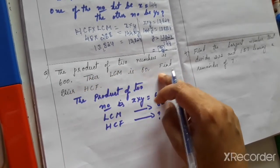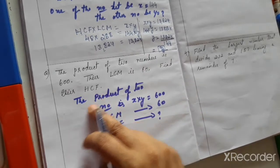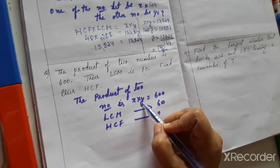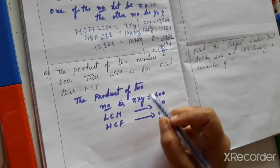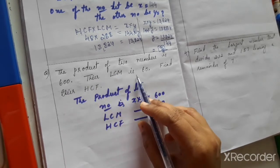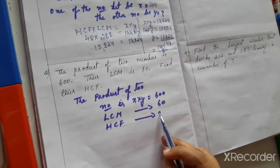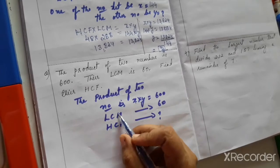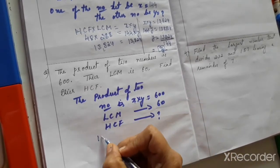Their LCM is 60. Find the HCF. The product of two numbers means x × y = 600, as given in the question. LCM is 60. Find the HCF — HCF equals question mark. We know that HCF × LCM = x × y. That is the property.